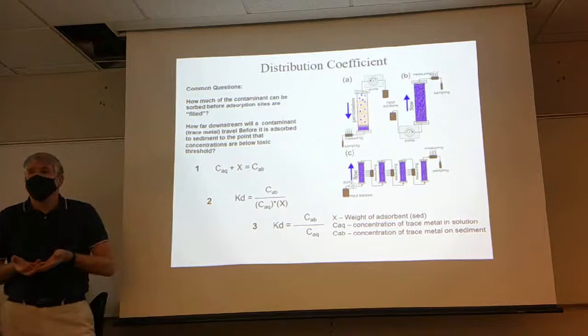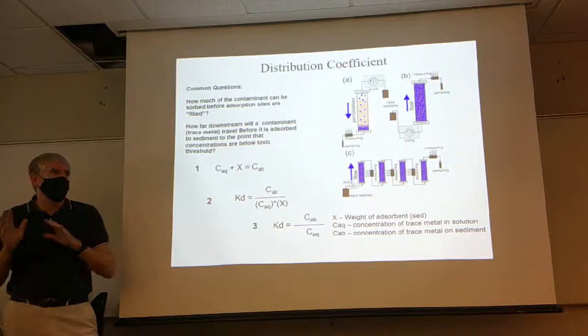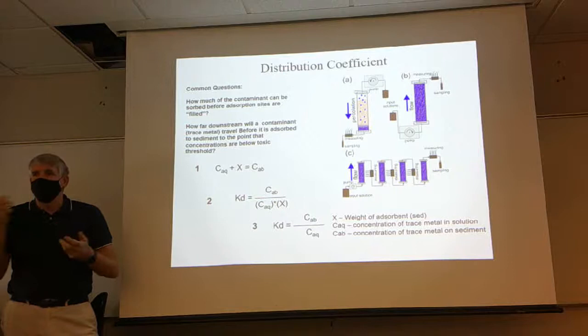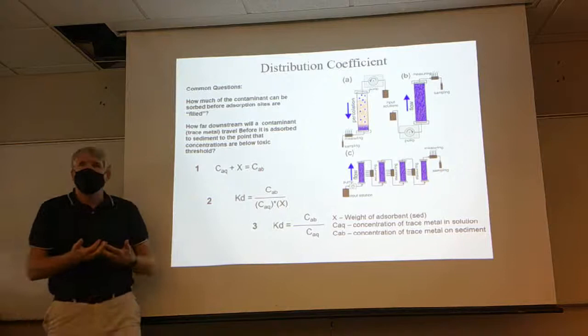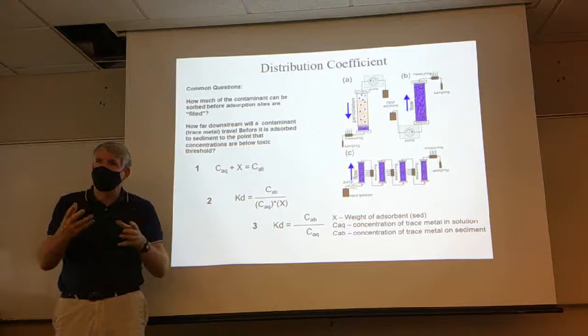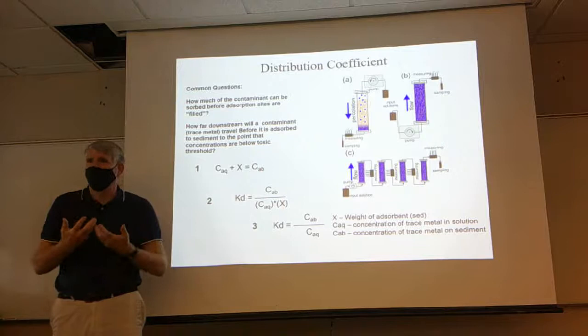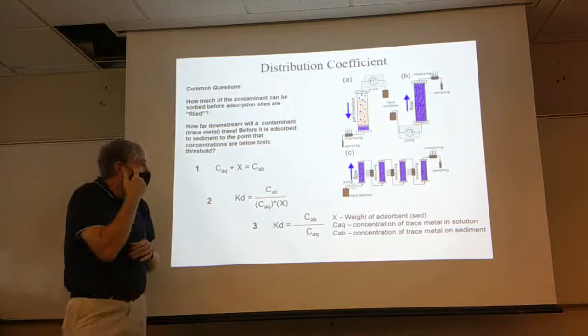This also works for remediation. For example, research is looking at peanut shells to see if they can be used to extract copper out of water in a treatment sense — using column testing and beaker tests to figure out how much those peanut shells can adsorb under different settings. So we can use this for remediation purposes as well.